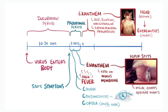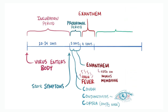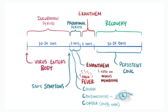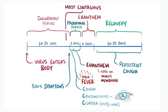This rash fades after about four days and leads into the recovery phase, which can last another 10 to 14 days, with the final symptom usually being a persistent cough. Infected people are most contagious starting from the final day of the incubation period through the prodromal and exanthem phase, which roughly works out to four days before to four days after the onset of the rash.